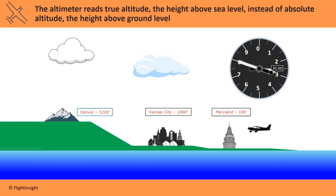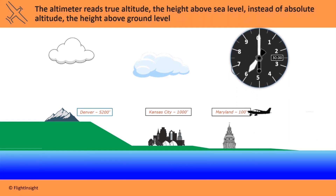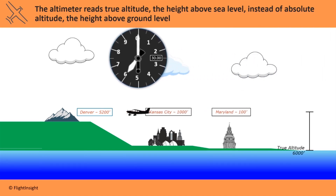When the aircraft climbs, the indication of altitude above sea level, or true altitude, increases. Note, though, that it gives no indication of actual height above the ground, or absolute altitude. This has to be determined by the pilot by comparing the indicated altitude to known terrain elevation.